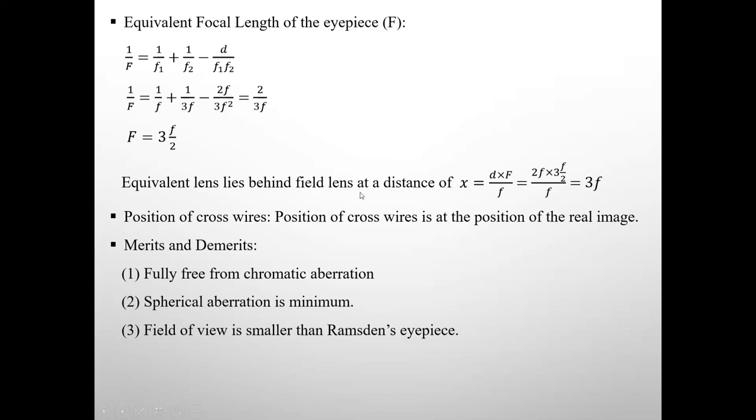Equivalent is behind field lens at distance 3F. Position of cross wires is at position of real image. Merits and demerits of this eyepiece: It is fully free from chromatic aberration, spherical aberration is minimum, and field of view is smaller than Ramsden's eyepiece.